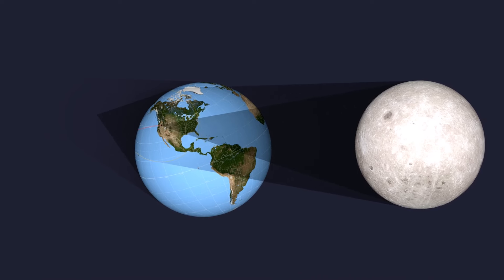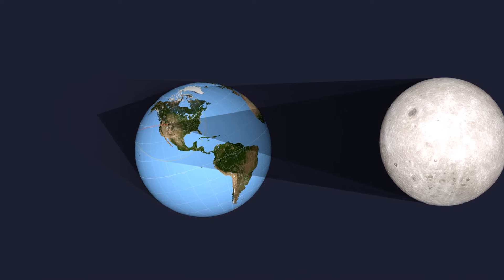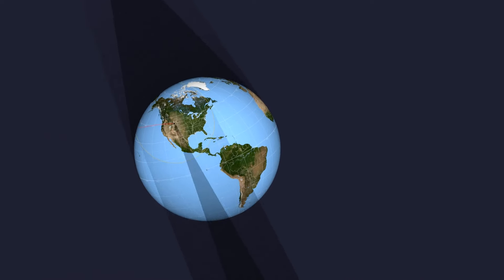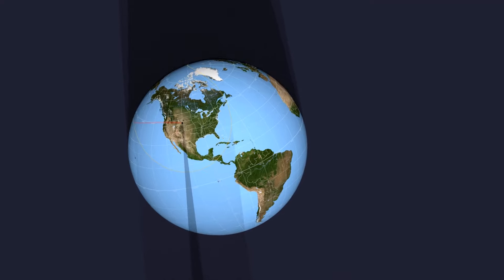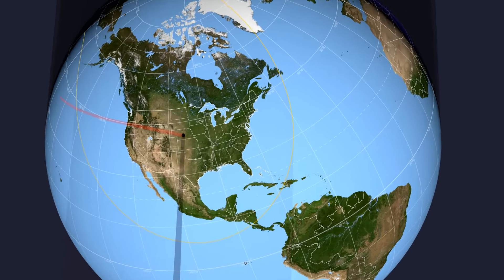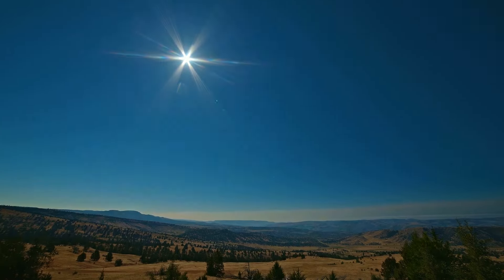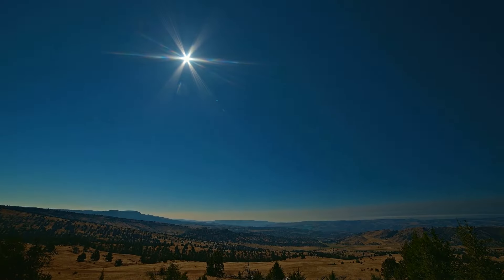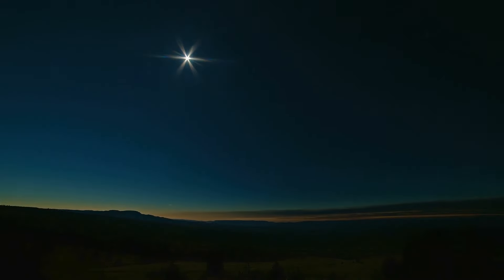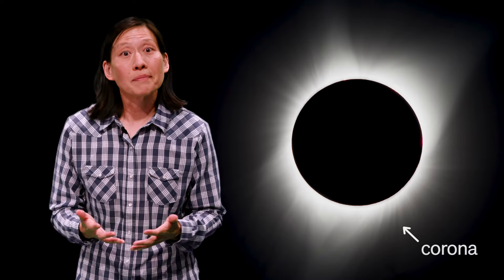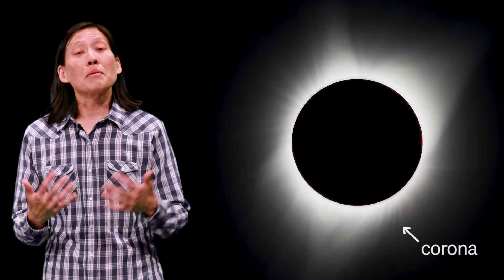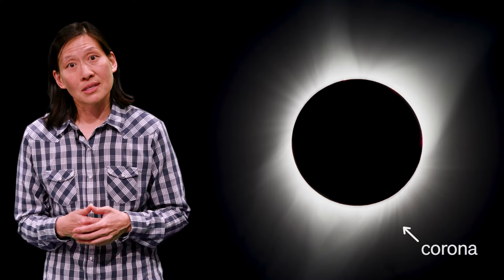Since the Earth and the Moon are constantly moving, this shadow will move too, tracing out a path called the path of totality. During totality, the sky becomes dark, and this is the only time you can see the outer atmosphere of the Sun with your naked eye. This is called the corona, and normally it's obscured by the bright face of the Sun.